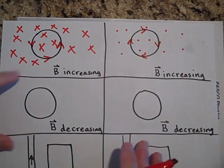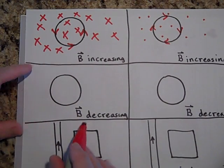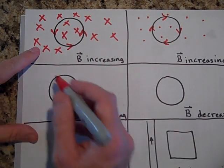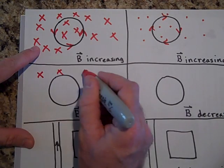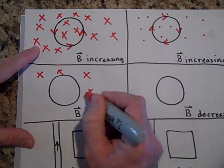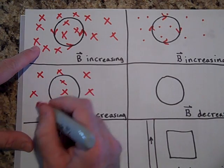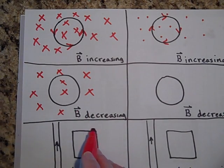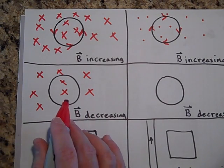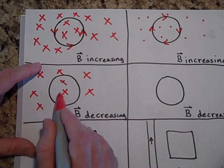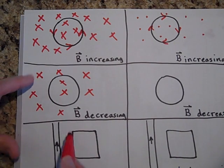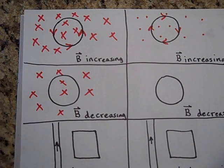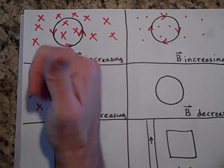Next example: let's say we have x's, and now the field is decreasing. The fact that the x's are decreasing inside — it only cares about the inside — means it's going to try to make dots, so to make dots it's going to make the current go this way.